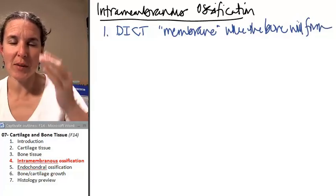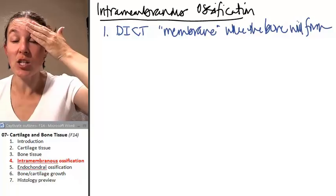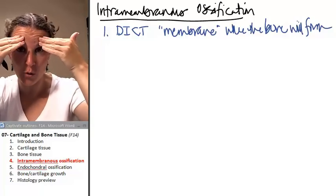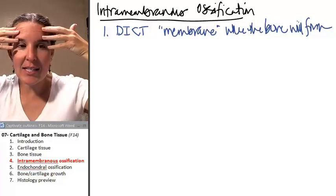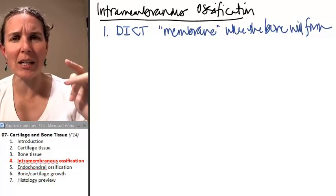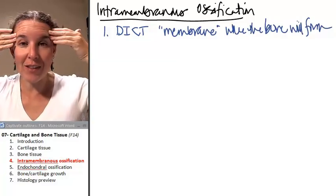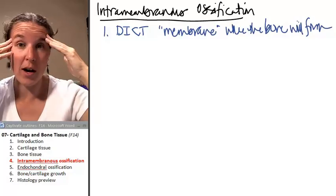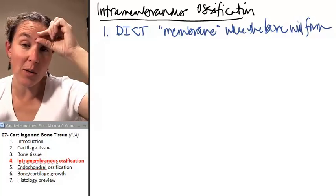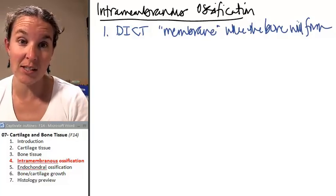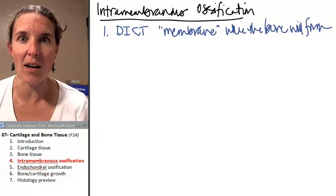So visualize. Intramembranous ossification happens with flat bones. So your skull bone, like your frontal bone. There is a dense, and this is back in the day, when you're eight weeks in your mama's belly, there is a flat, dense, irregular connective tissue structure in your forehead. And if somebody went in and squished your head, they'd squish it because it's just dense irregular connective tissue. It is not yet bone.